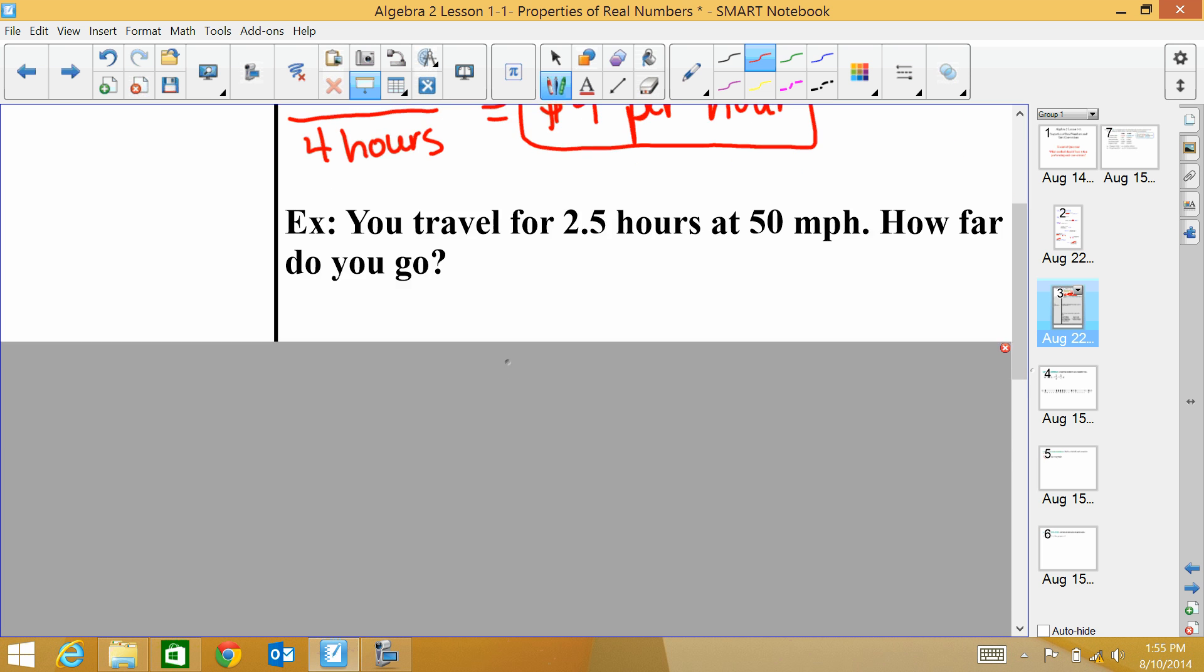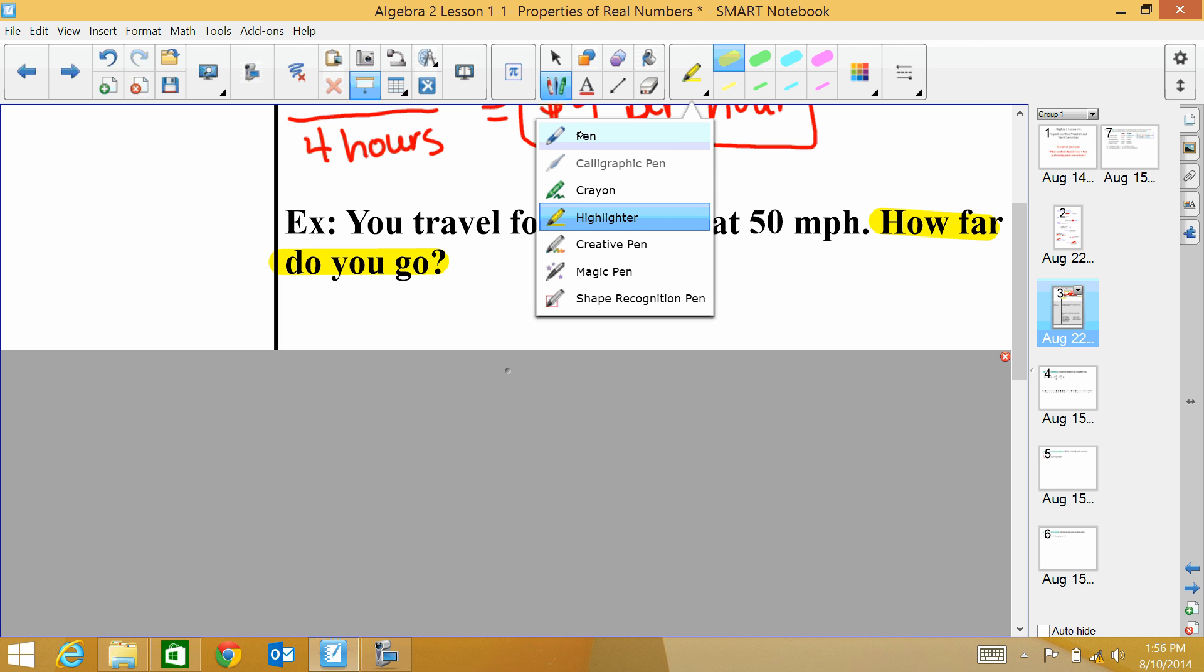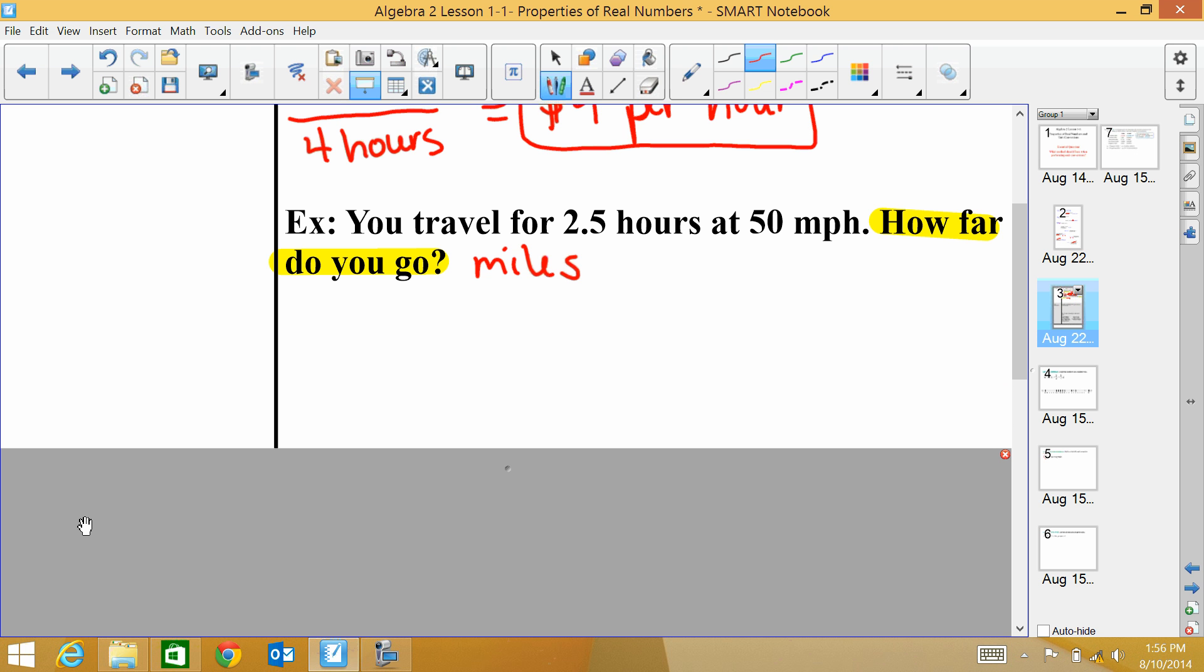Let's take a look at another question. You travel for two and a half hours at 50 miles per hour. How far do you go? Now this one is a little bit tricky because we don't want our answer to be in miles per hour. Like the last question, we had dollars per hour. But this time, it says how far do you go? So our answer is going to be in what unit of measure. If it's asking how far, we're asking the miles that we've traveled. So when we set this up, we're going to write down what we have. And then we're going to do something called a conversion chart. So I have two and a half hours.